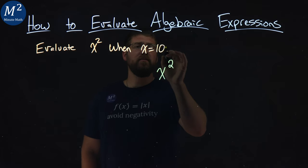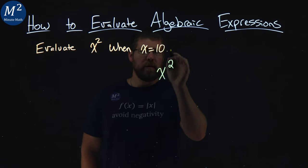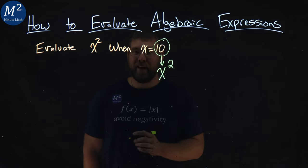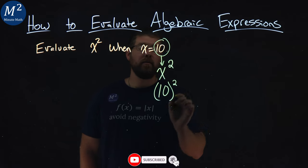From there, I want to substitute 10 in for x. So I'm going to take this 10 here and write it right in for that x value. So now we have a 10 here for the x, and we're squaring that.